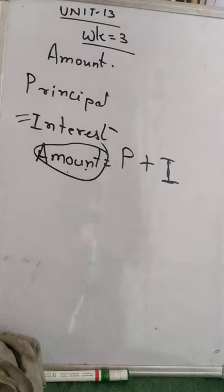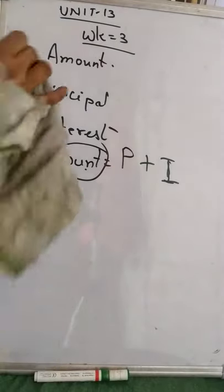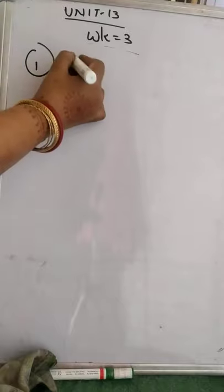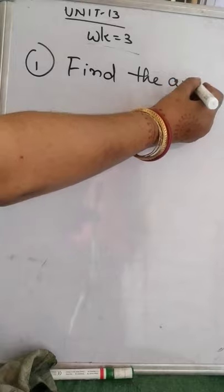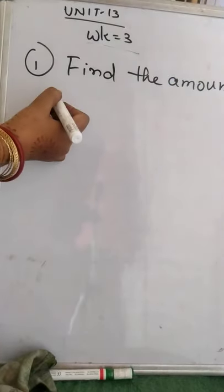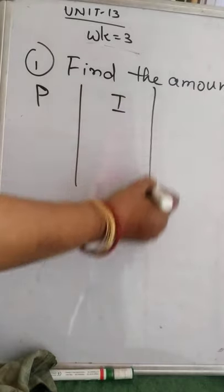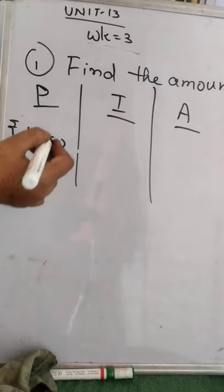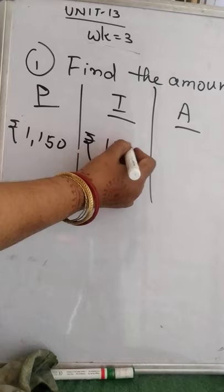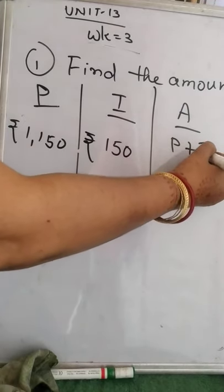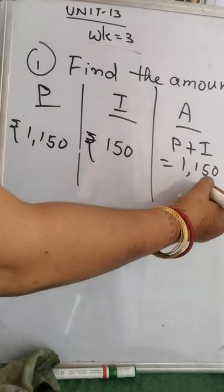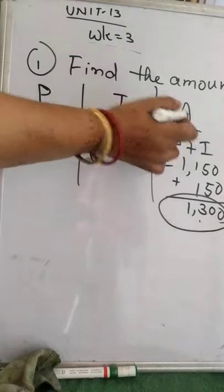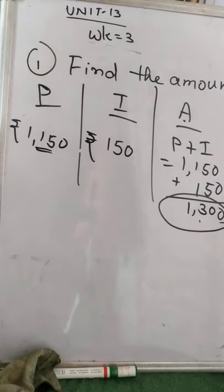So now let us start with Worksheet Number 3. In Question Number 1, you have to find the amount. There is a table with columns: principle, interest, and amount. For example, first is rupees 1150, and the interest is 150. So the amount is principle plus interest, that is 1150 plus 150, which equals 1300 rupees. Amount is always more than the principle.